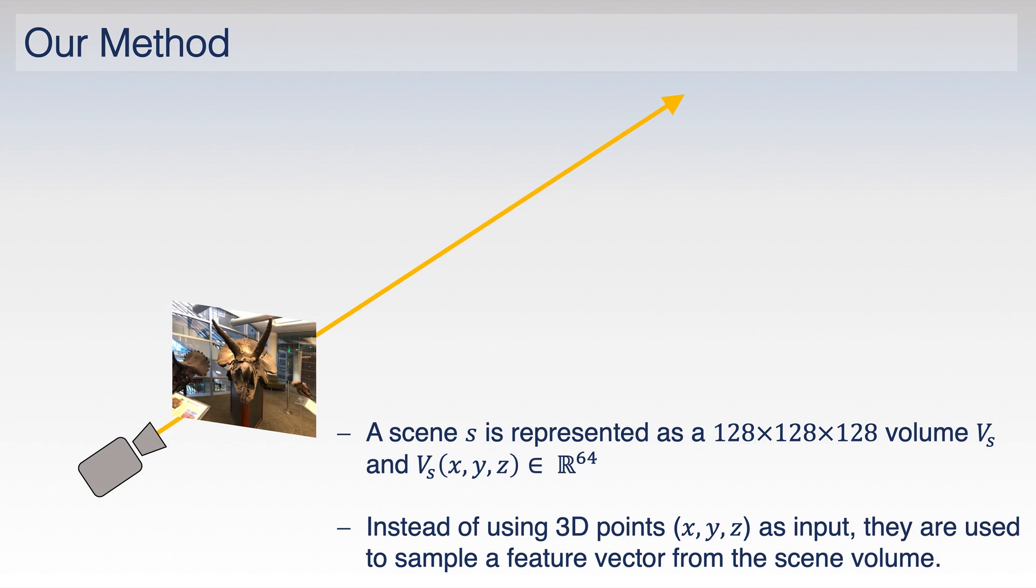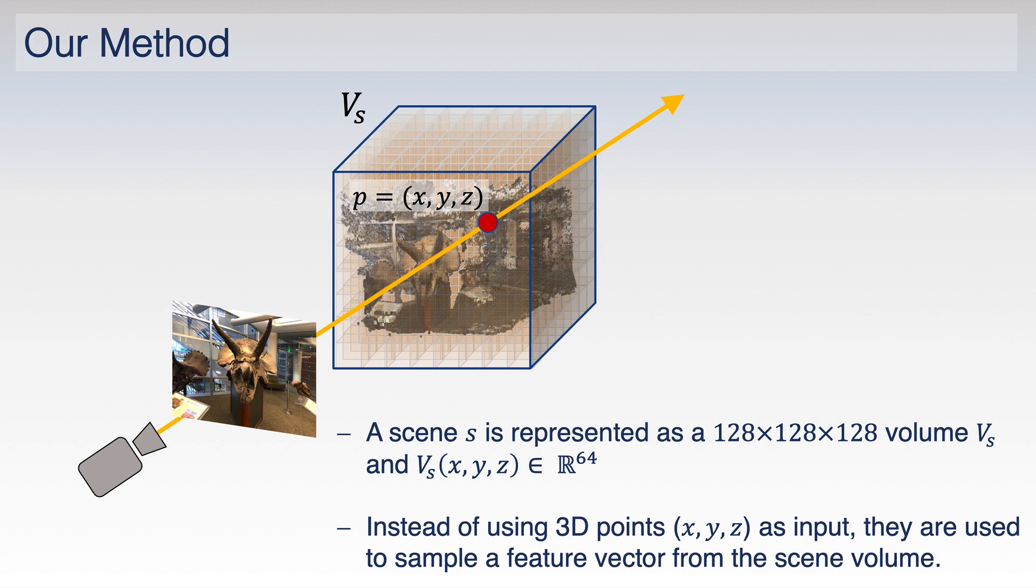In Control NeRF, we represent the scene as a dense feature volume. For each point sampled along the ray, we query the volume using trilinear sampling to extract a feature vector. This feature vector is then fed to the radiance network to produce the color and density value for the given 3D location.